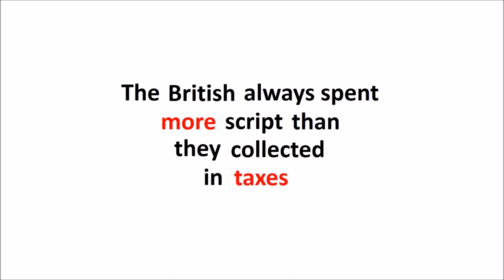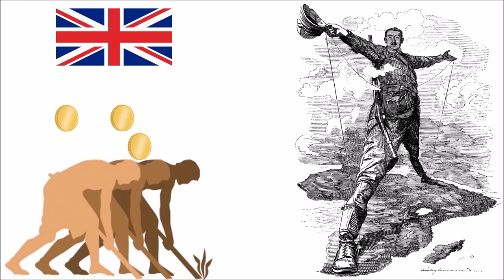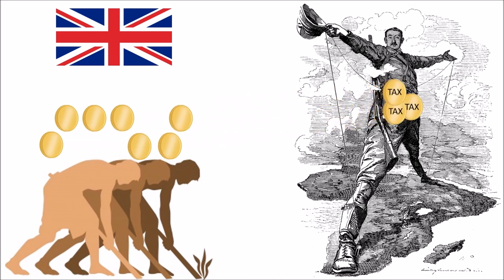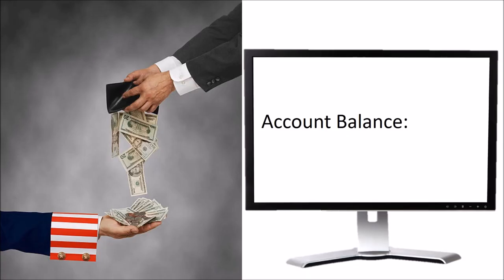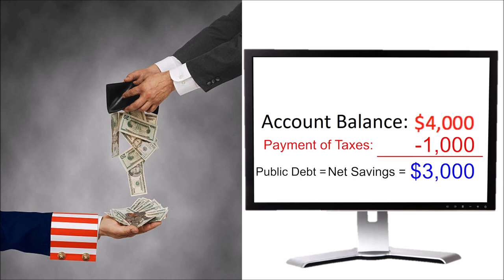Lesson two: The British always spent more script than they collected in taxes — in other words, they were always operating with a deficit. This meant people were looking for more script than they needed to simply pay the tax, which created a supply of script held by the public that hadn't yet been used to pay taxes. The extra script added to the money supply and savings of the economy. We can see the same in the US today: if the government pays you $4,000 and $1,000 in tax dollars are subtracted, you're left with $3,000. Those after-tax dollars remaining in people's accounts are collectively known as the public debt, or the net savings in the economy.